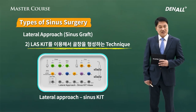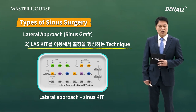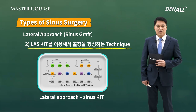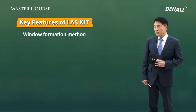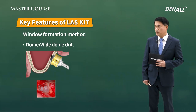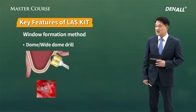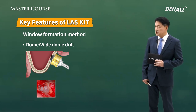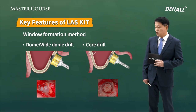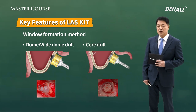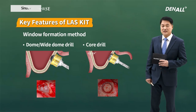When you do lateral approach, you can also use the LAS kit to form the window. There are two ways: use a dome or wide dome drill and grind it thoroughly, or use a core drill for repositioning — you remove it and then put it back on once again.